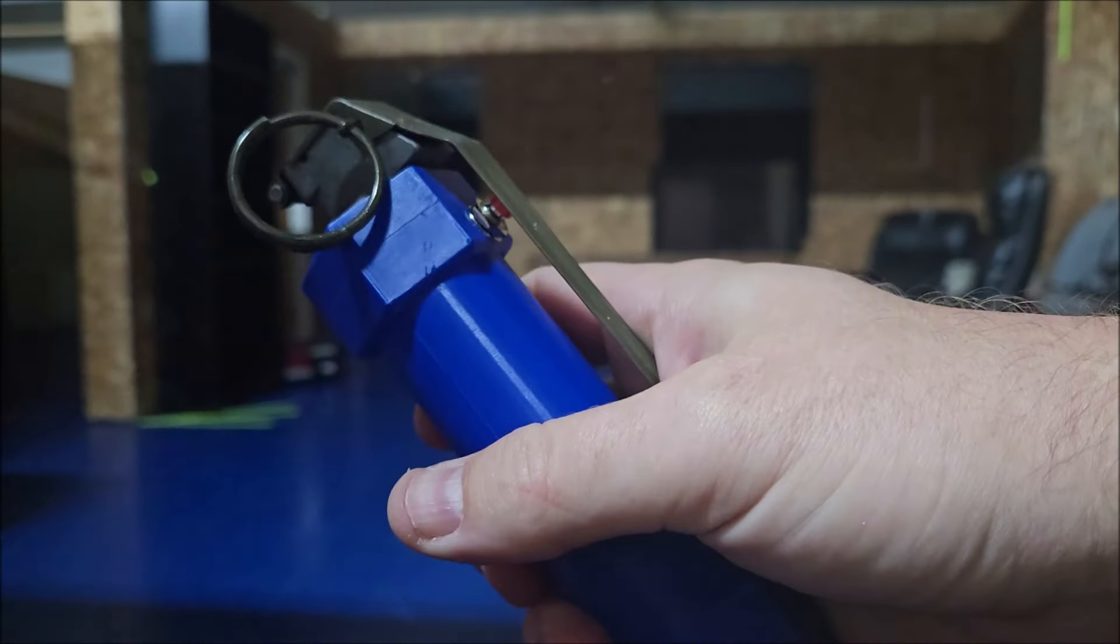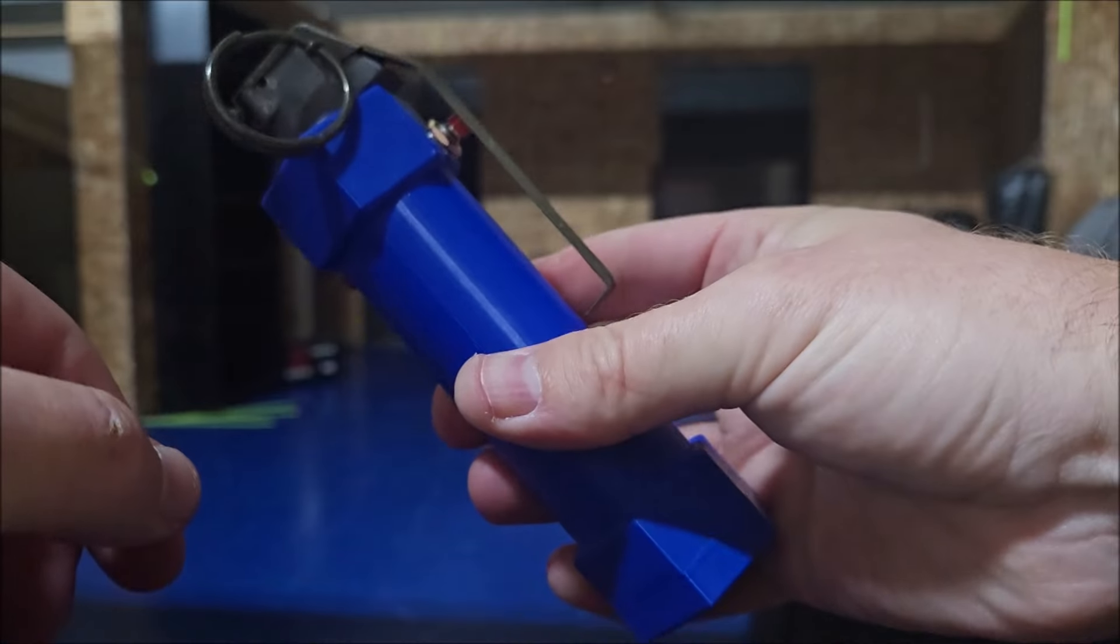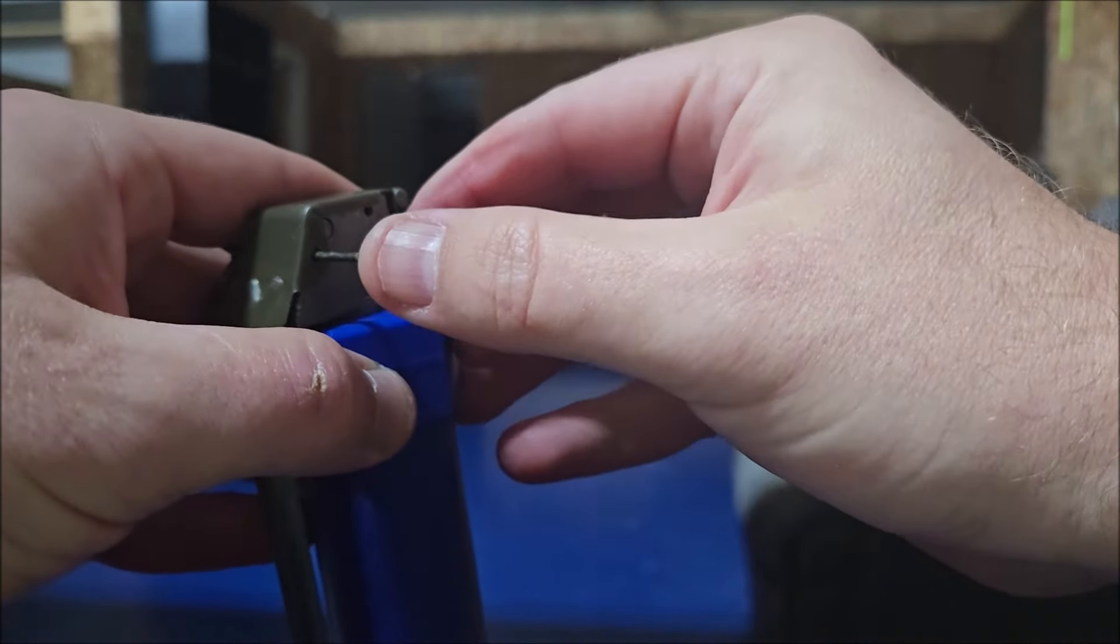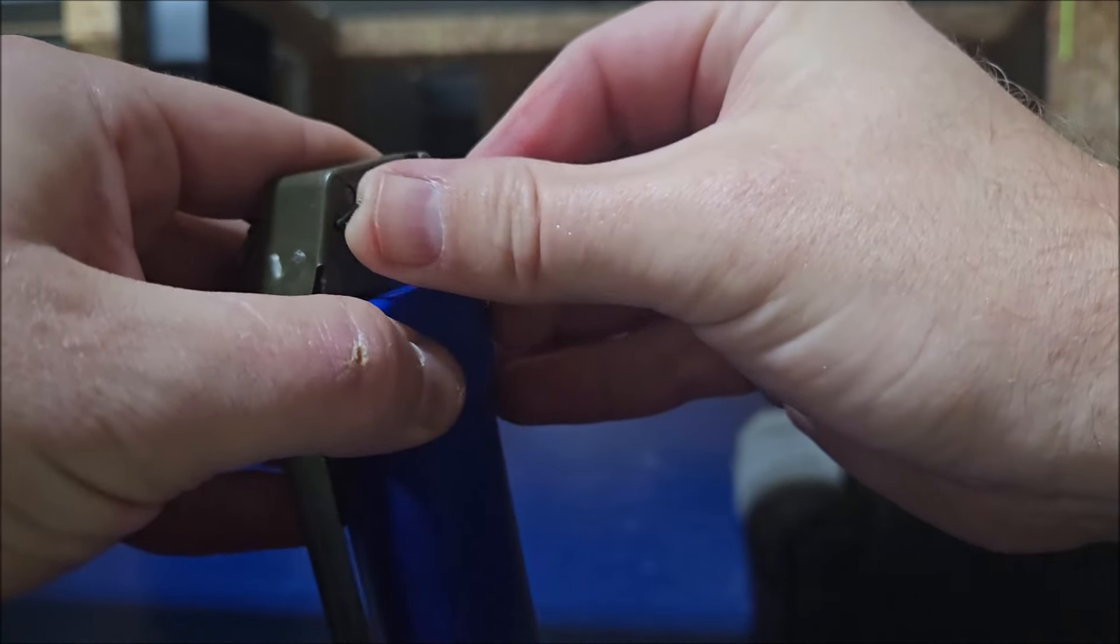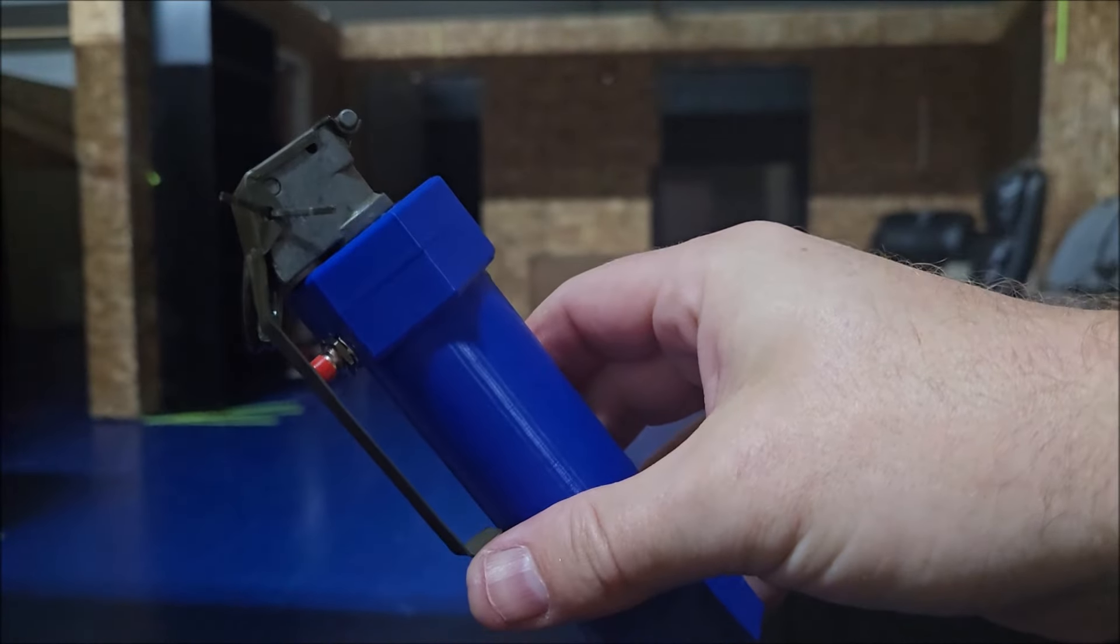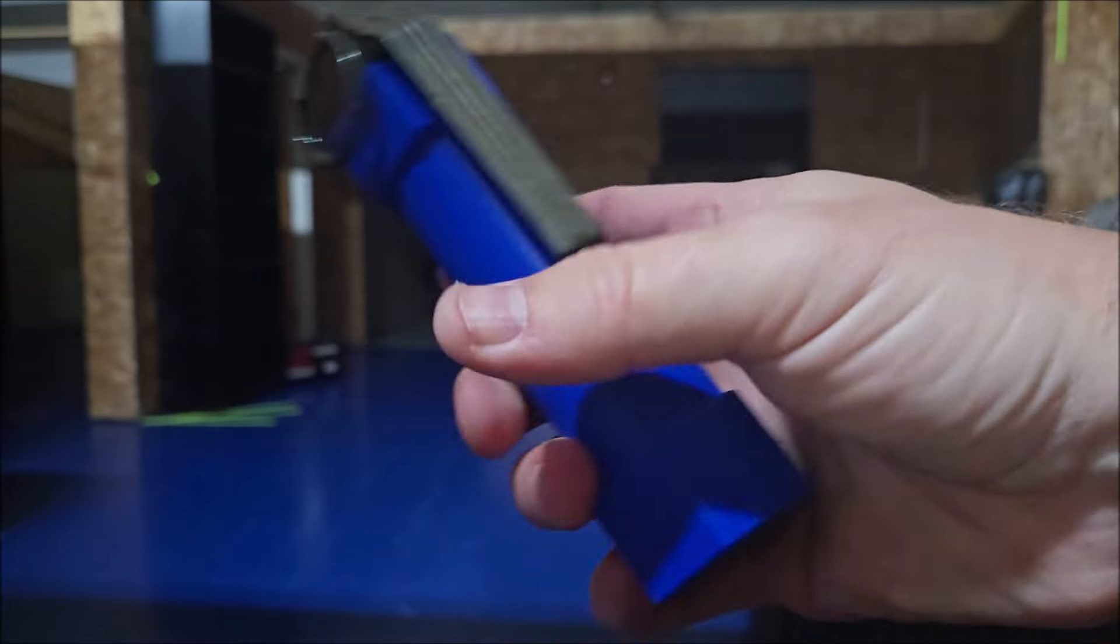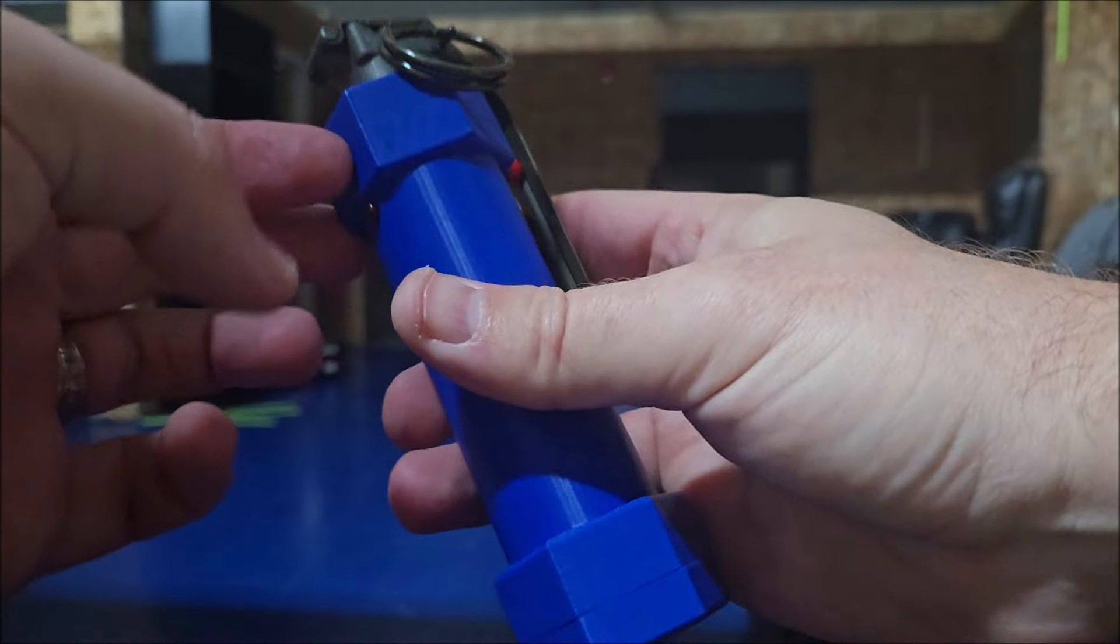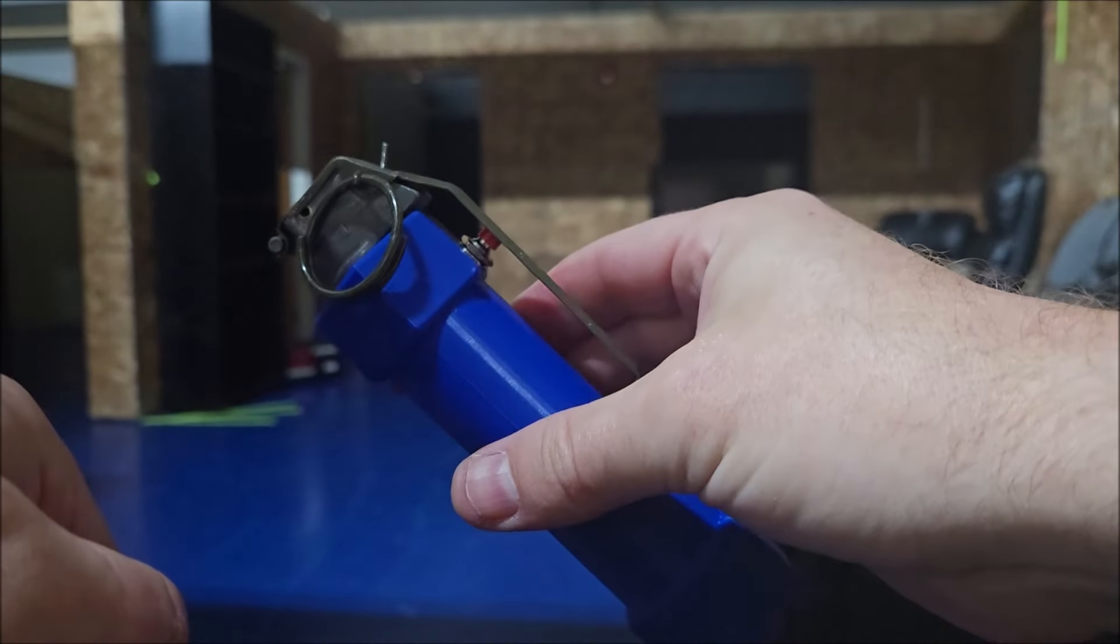Once you have the pin all the way through, the spoon is set and safe. You can release that and it won't fly off. If you'd like to secure it additionally, you can go ahead and bend those ears back on the pin for extra security. If you'd like to throw the grenade again, you can simply turn it back on or if you're ready to store it, turn it in the off position and you're ready to go.